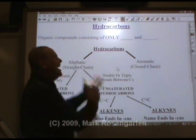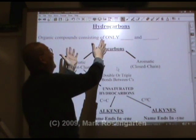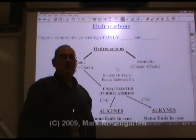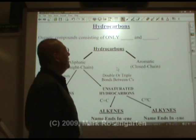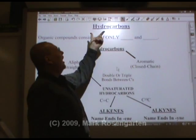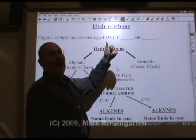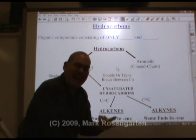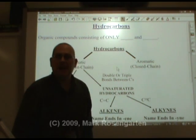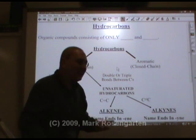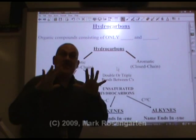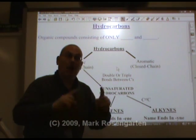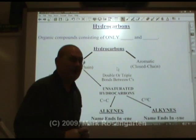Hydrocarbons — based on their name, you can very easily determine that they're molecules made of hydrogen and carbon, and only hydrogen and carbon. If there's anything else in the molecule — a chlorine, an oxygen, a nitrogen — then it's not a hydrocarbon. A hydrocarbon has only hydrogen and carbon.